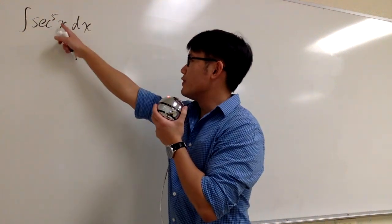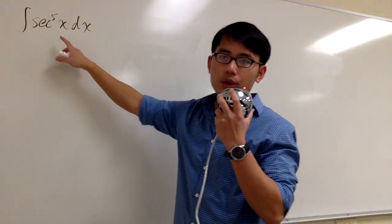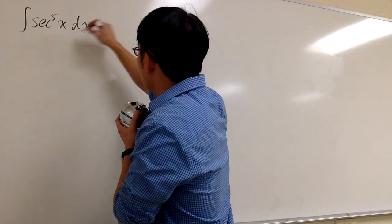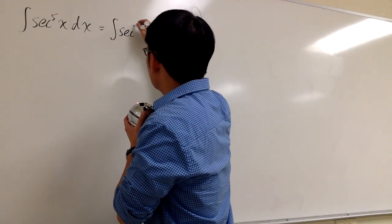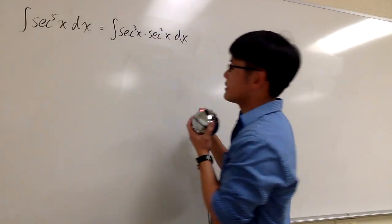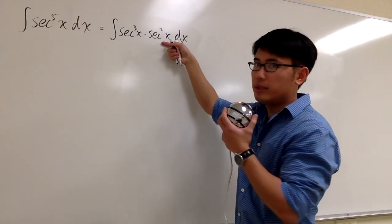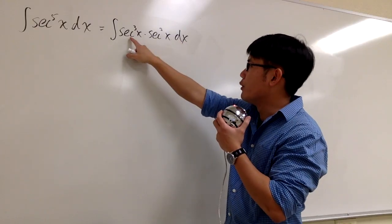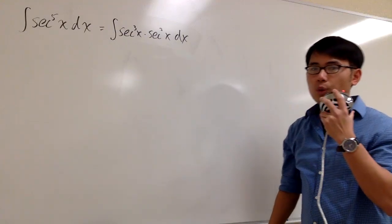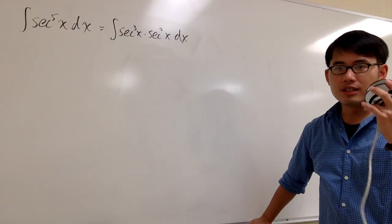Let's integrate secant to the fifth power x. The first question is how are we going to break down the fifth power. The correct way is to look at this as the integral of secant to the third power x times secant squared x dx. The reason is because we can integrate secant squared pretty easily, and we have no problem differentiating secant to the third power. We have to do it by integration by parts, very similar to the secant to the third power situation.